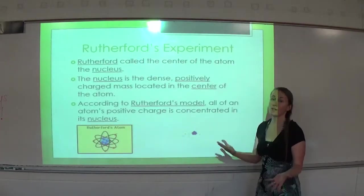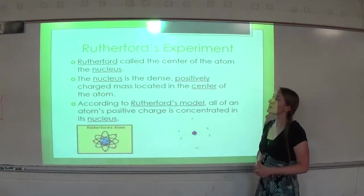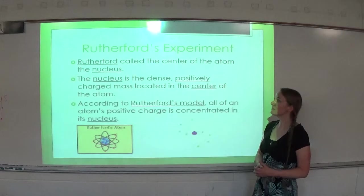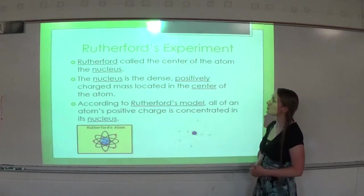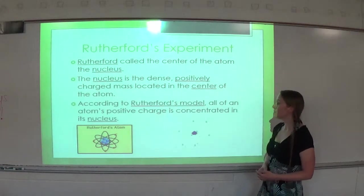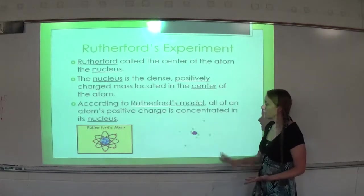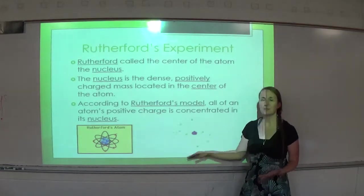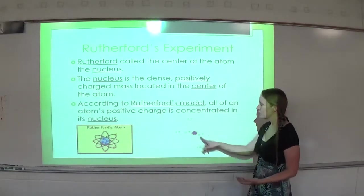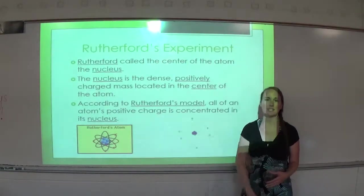Rutherford disproved the plum pudding model. He called the center of the atom the nucleus — the dense positively charged mass located at the center of the atom. According to Rutherford's model, all of an atom's positive charge is concentrated in the nucleus. Now we get something more recognizable: protons and neutrons in the nucleus and electrons in the electron cloud.